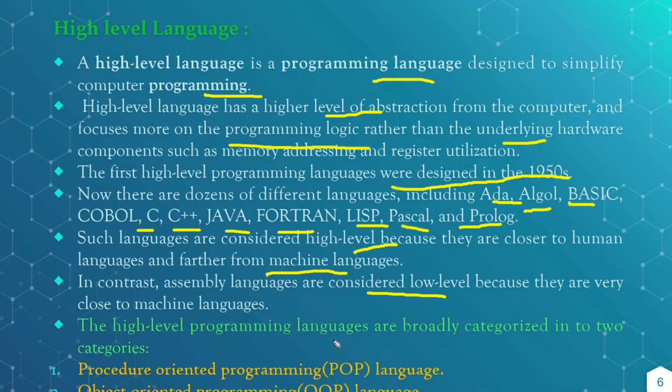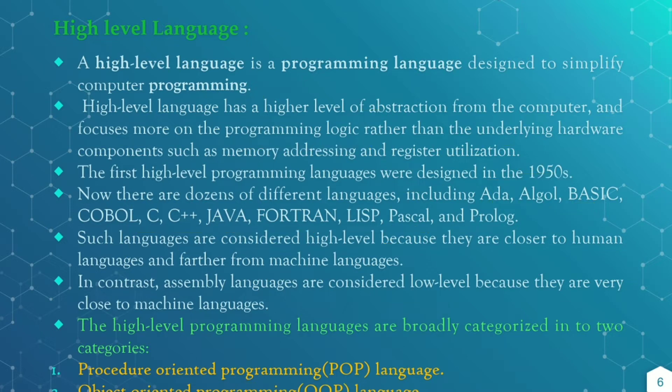And these high level languages are broadly categorized into two types: one is the POP — Procedure Oriented Programming language — and another is the Object Oriented Programming language.